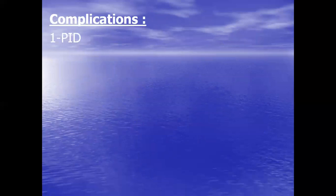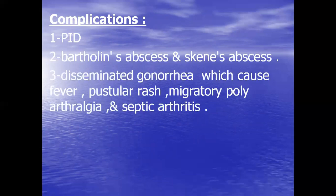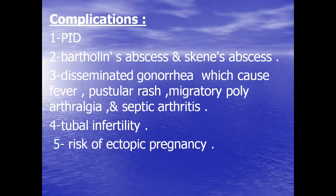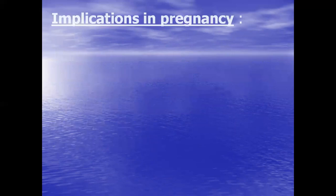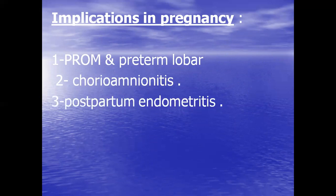Complications of gonorrhea include PID, Bartholin abscess and skin abscess, and disseminated gonorrhea causing fever, vascular rash, migratory polyarthralgia, and septic arthritis. Also tubal infertility and risk of ectopic pregnancy. Implications in pregnancy include preterm labor, chorioamnionitis, postpartum endometritis, and ophthalmia neonatorum.